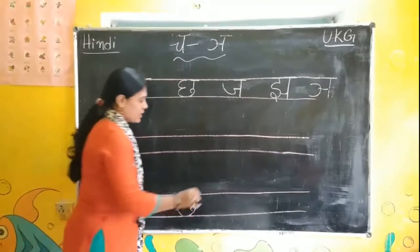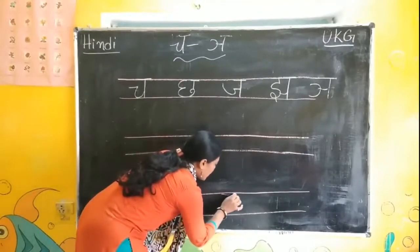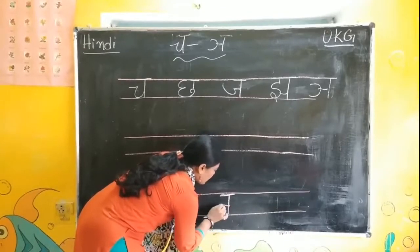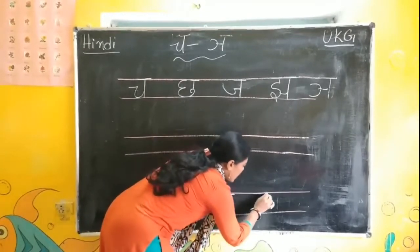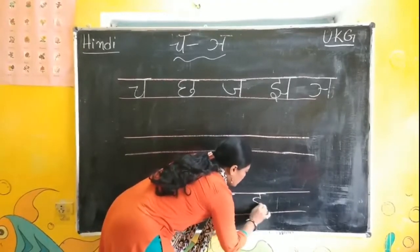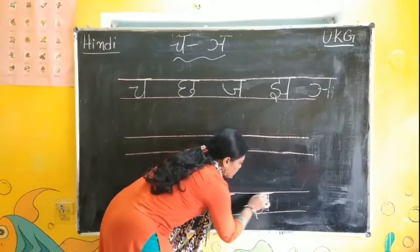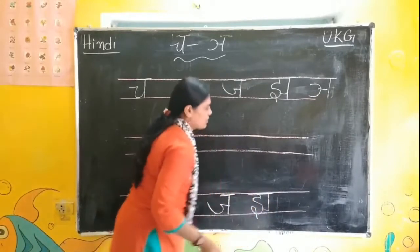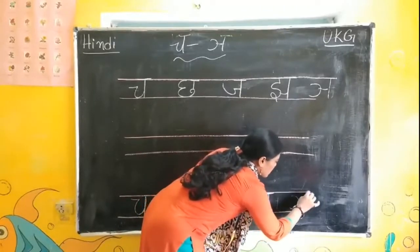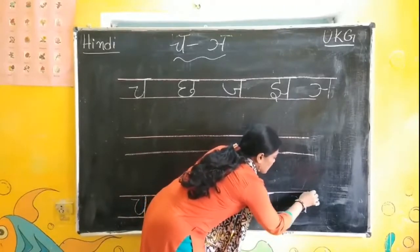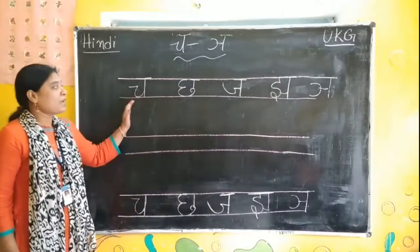Cha se Chakri. Ja, Ja se Jahas. Jha, Jha se. Jash, Illi. Repeat one more time.